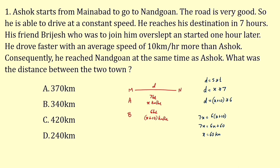Ashok drove at a speed of 60 km per hour. To find the distance, substitute x = 60: 60 into 7 equals 420 km. So the correct answer is 420 km.